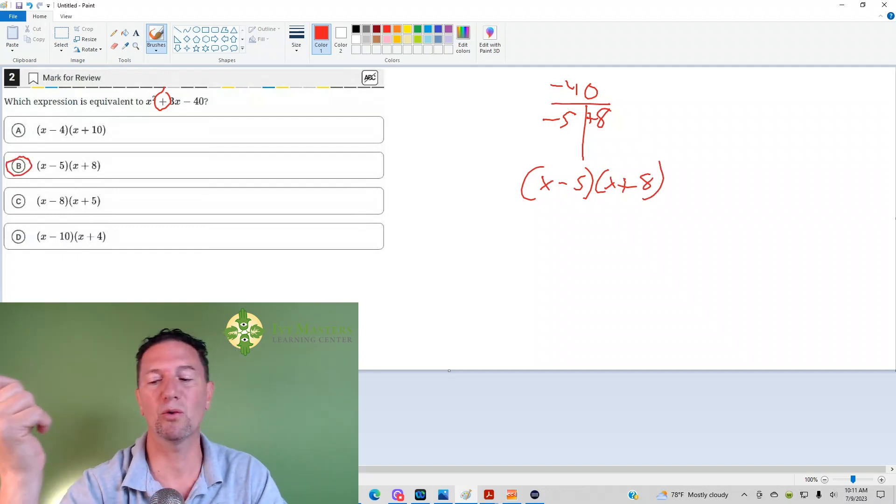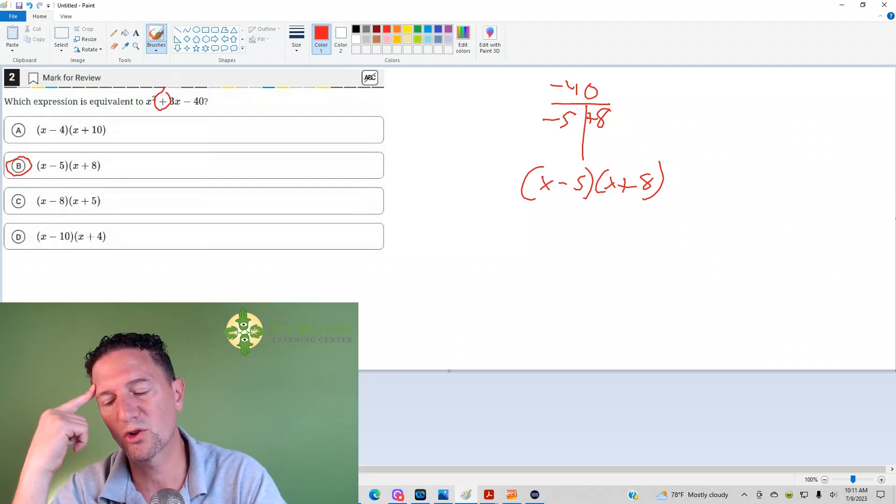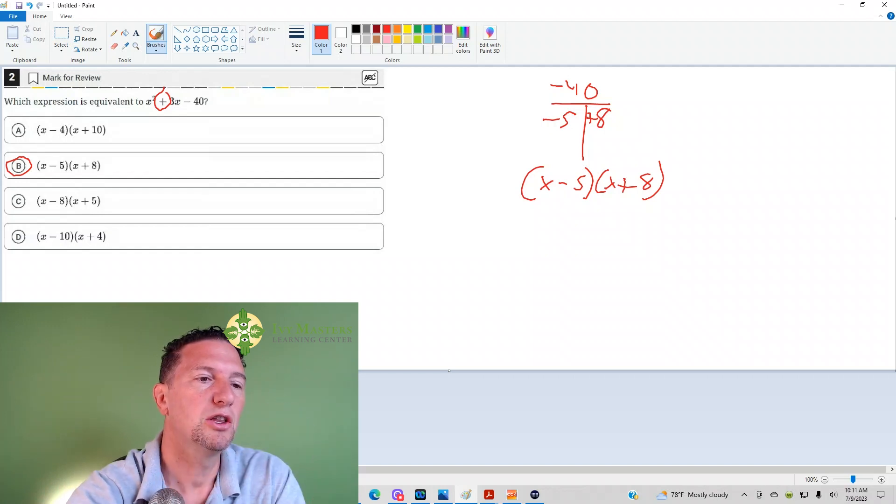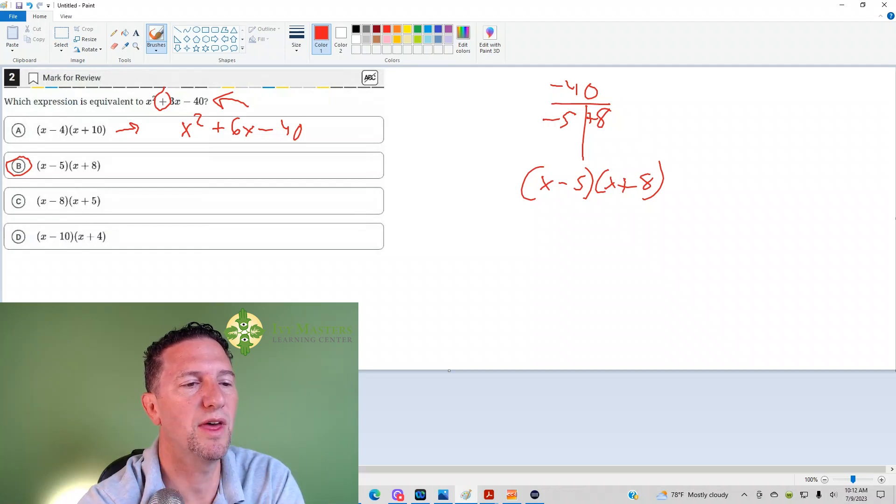Now, I'm going to show you three different ways you can do it if you have trouble factoring. One thing you can do is use your answer choices here. Literally, if I foiled this, and I'm not going to do every step, but I'd get x squared plus 6x minus 40. And I need a 3x in the middle, so that doesn't work.